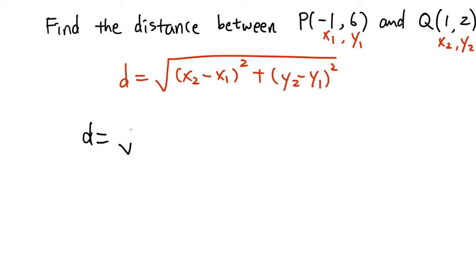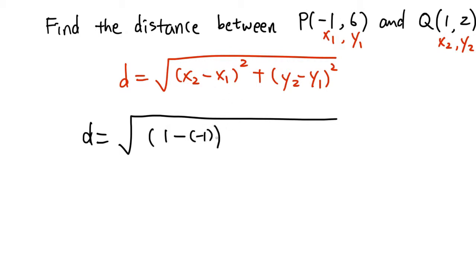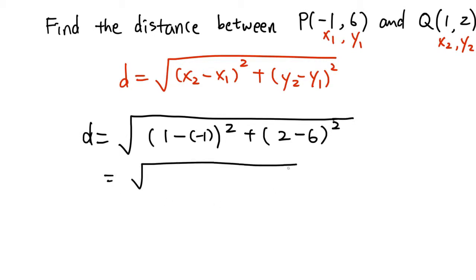So in this case, the distance is the square root of: (x2, which is 1, minus x1, which is negative 1) squared, plus (y2, which is 2, minus y1, which is 6) squared. Now we just need to compute and simplify this number, and that's going to be the distance between the two points.